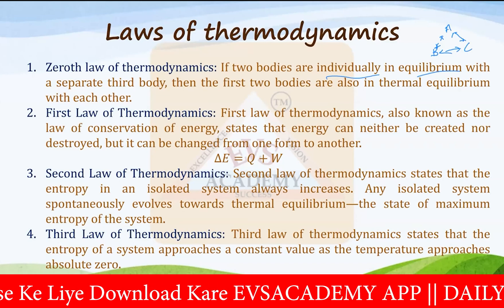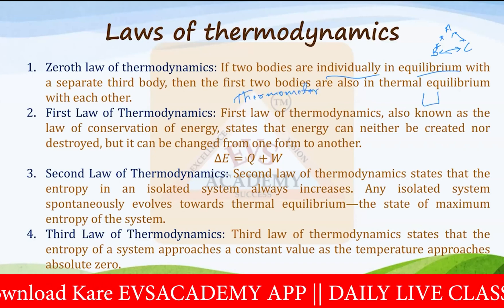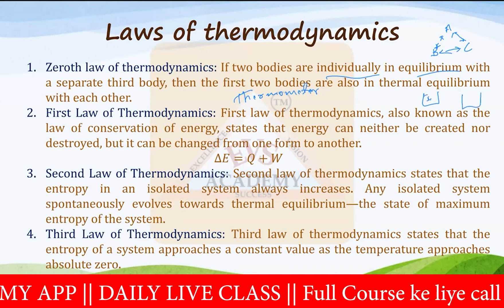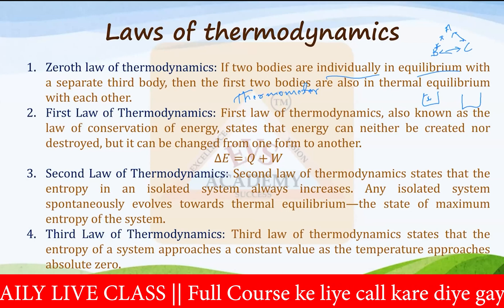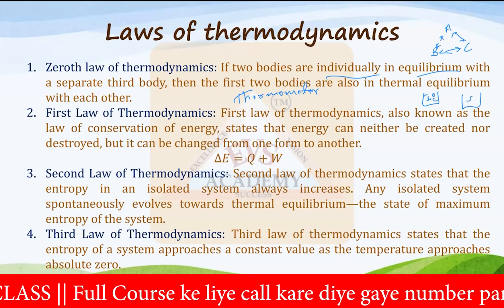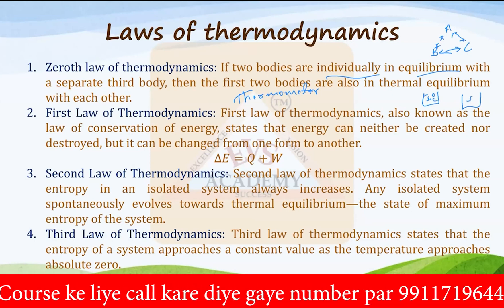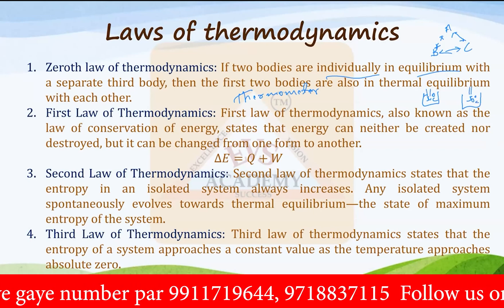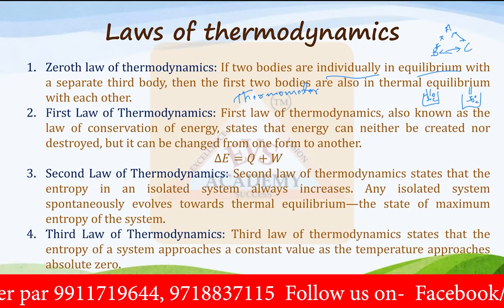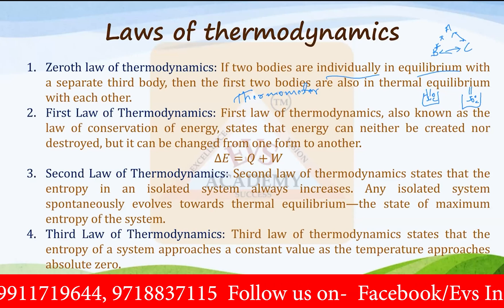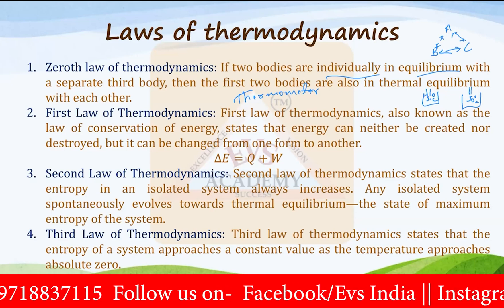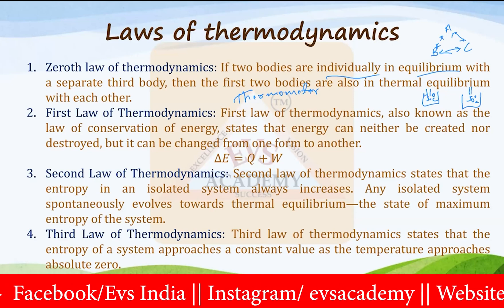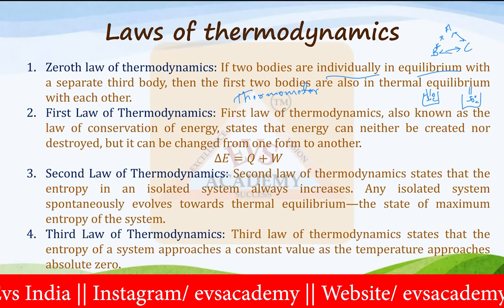If I have two different bodies both at 50 degrees Celsius, how can I say they are both at the same temperature? I will put a thermometer in each and see the readings — these two bodies are in equilibrium. That is how the concept of the thermometer comes from the Zeroth Law of Thermodynamics.